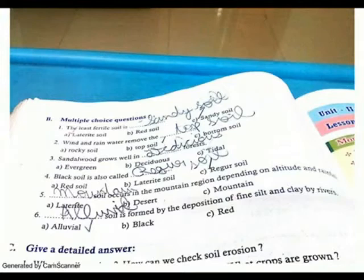The least fertile soil is sandy soil. Wind and rainwater remove the top soil. Sandalwood grows well in laterite soil. Black soil is also called regur soil.